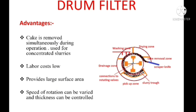The advantages of drum filter: the cake is removed simultaneously during operation, so it can be used as a continuous filtration equipment. We can filter highly concentrated slurries. Labor cost is low and it provides a large surface area. The speed of rotation can be varied and the cake thickness can be controlled.